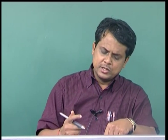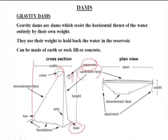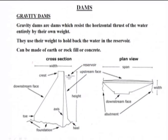The other face is the downstream face, and the top of the dam is the crest. The width is measured from the base. In the plan view, the span includes the upstream face, width, downstream face, and abutments at the sides.